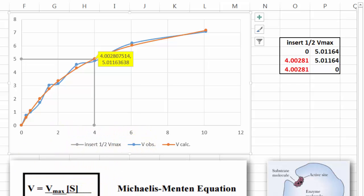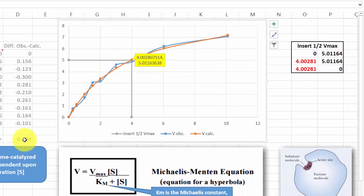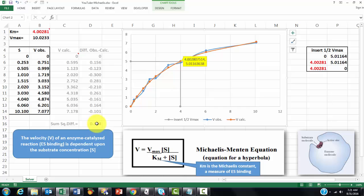So we found a very good solution. We have a very small square difference sum. And the curve is pretty cool.